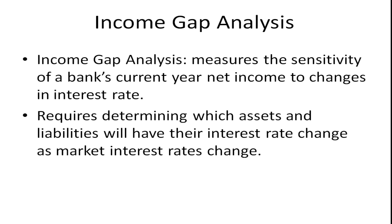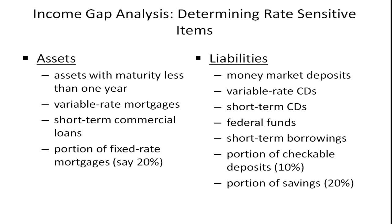Gap analysis requires determining which assets and liabilities will have their interest rate change as market interest rates change. Some assets are not going to change; others will change because they're short-term assets and the institution will either have to pay more or receive more or less depending on the general level of interest rates. For example, assets with maturities less than one year — a loan paid off in under a year means once the institution gets the money back, they'll create another loan. But if interest rates have gone down, they may not be able to charge as much for that loan.